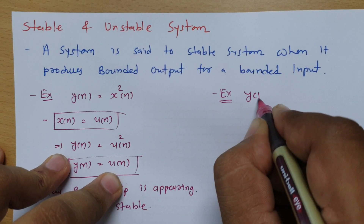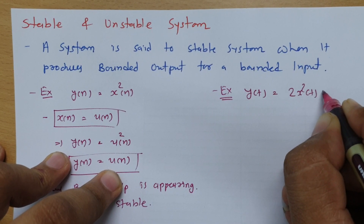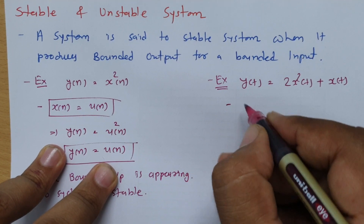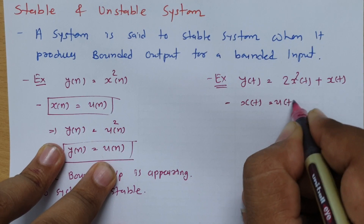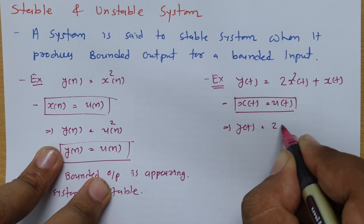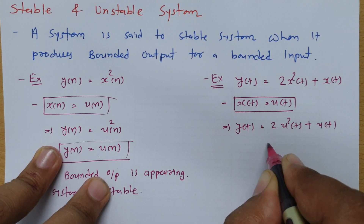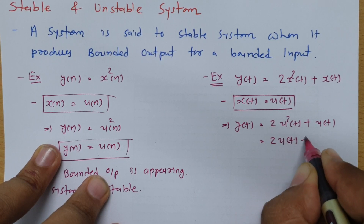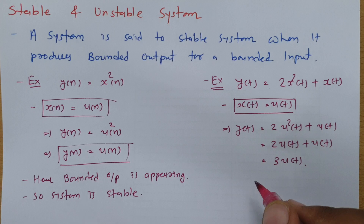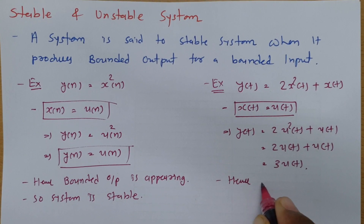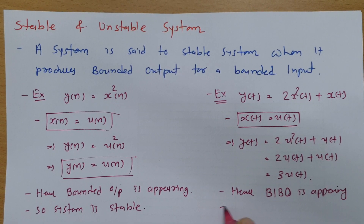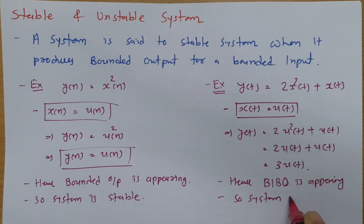Let us have a few more cases. If y(t) = 2x²(t) + x(t), again we need to give step input, so x(t) = u(t). Substituting, we get y(t) = 2u²(t) + u(t), which equals 3u(t). Since 3u(t) is a bounded output, bounded input is producing bounded output, so we can say this system is stable.